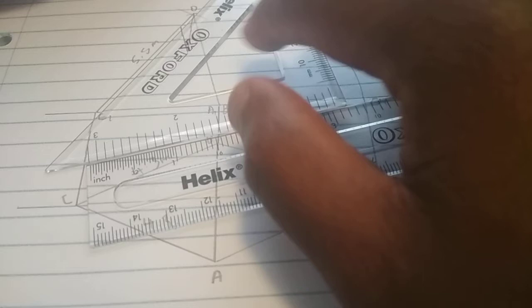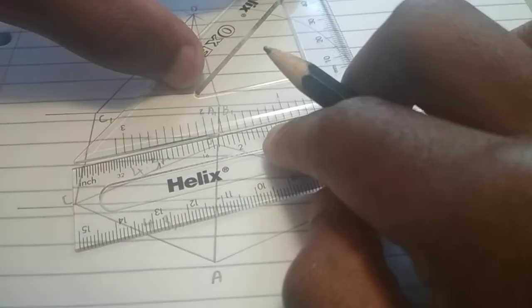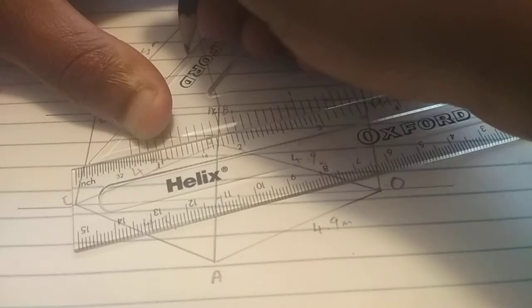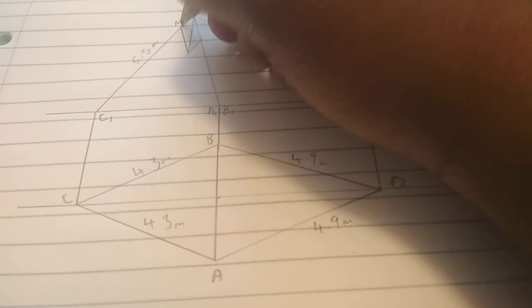Do the same this side. Put the set square on that leg. Put the ruler there and then slide until you hit the bottom of the... And then you draw it. Next part is just to name them. That's M and that's N.